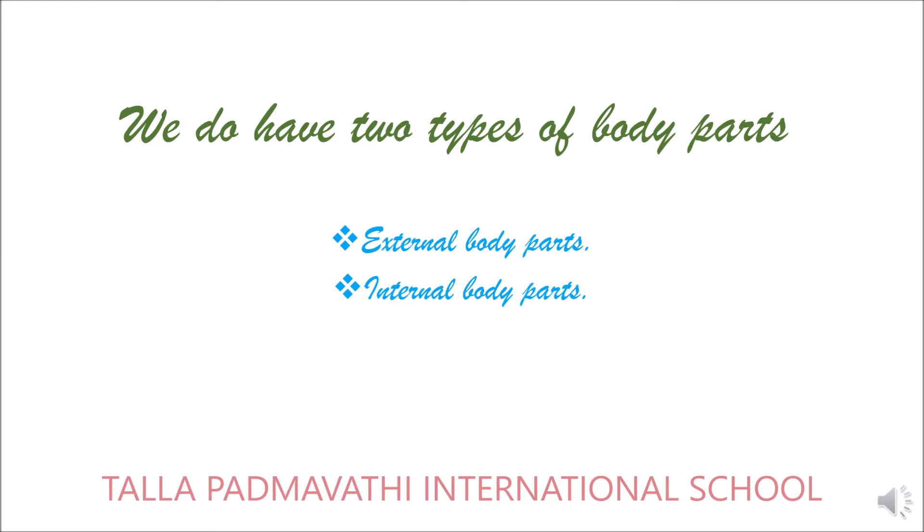Our body has two types of body parts. The first one is external body parts and the next is internal body parts. The body parts which we can see are called external body parts — like our head, neck, chest, arms, and legs. The body parts which we cannot see are called internal body parts.